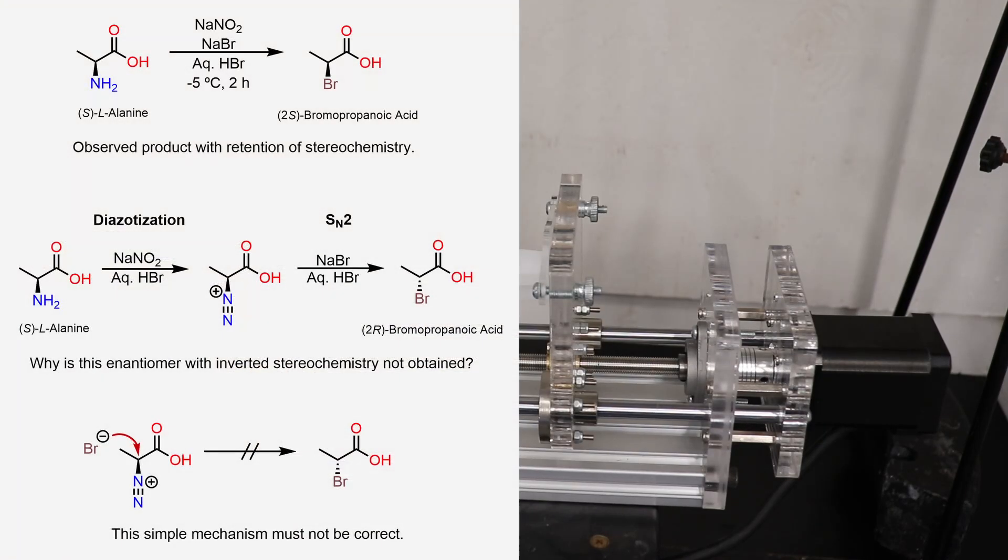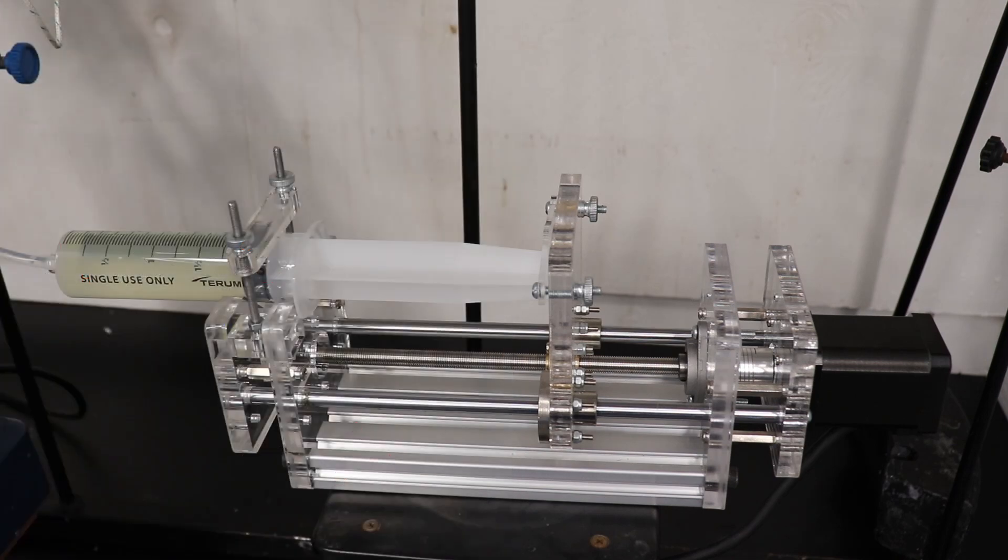One thing I found curious about this reaction is that the product has the same stereochemical configuration as the starting L-alanine. This is not really expected, as after an SN2 of bromide at the diazonium, you'd expect to get inversion of the stereocenter. So what's going on?